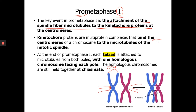During Meiosis I, the two homologous chromosomes will be separated. The spindle fibers are going to pull one homologous chromosome to one direction, and the other homologous chromosome will be pulled to the opposite direction. They will end up in two different daughter cells. At the end of Prometaphase I, each tetrad is attached to microtubules from both poles.